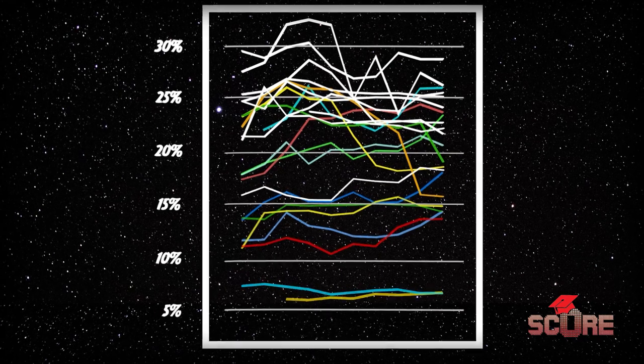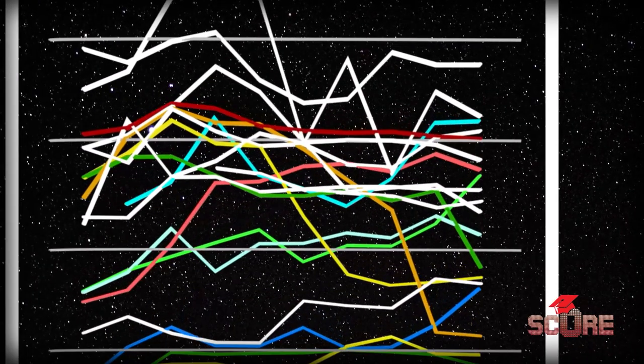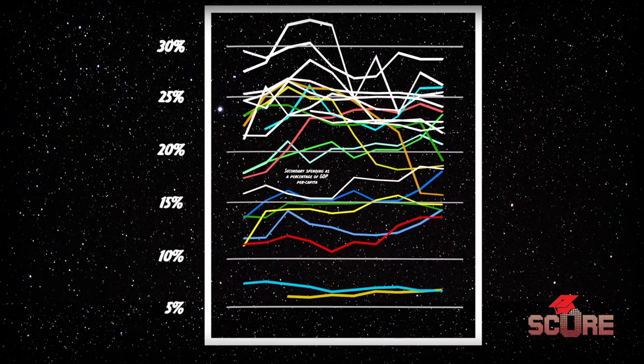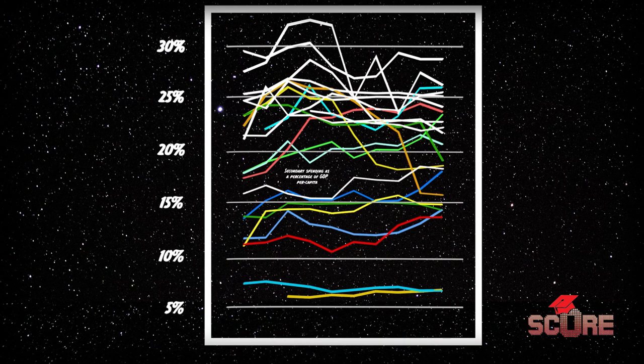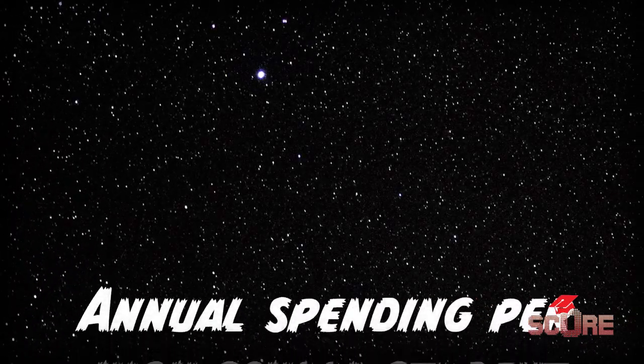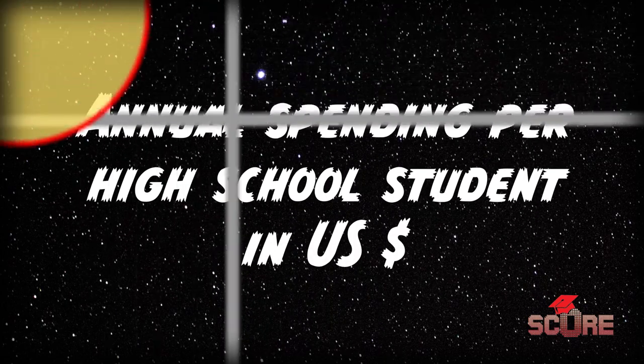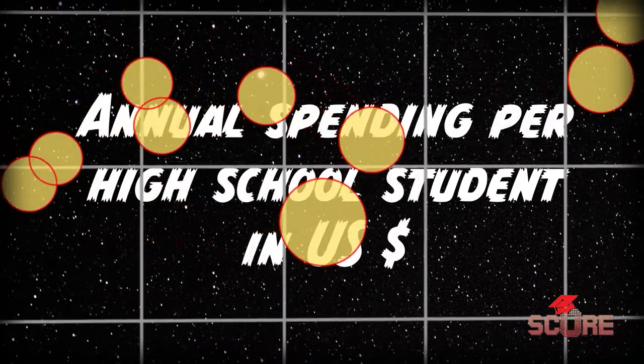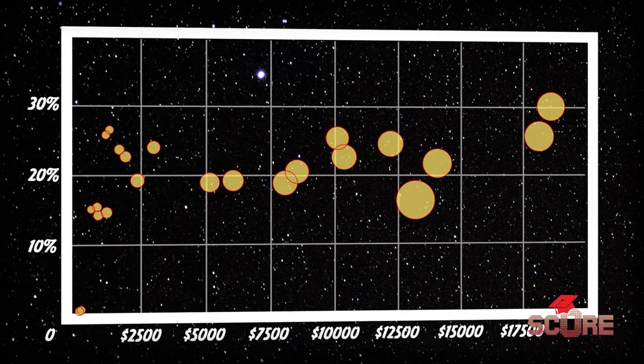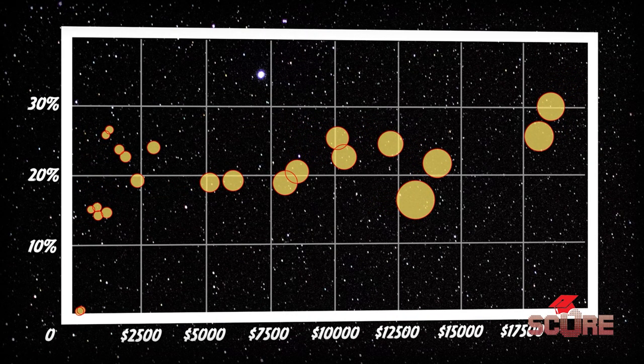Percentages are relative. Belize and France ended up at almost the exact same spot here. But clearly France's GDP must be much larger, so they must be investing more money into their students. How much more? By multiplying that last year's percentage by the GDP per capita of each country, we can find out exactly how much each country spends on each high school student every year.